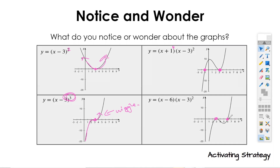We're also going to have an x-intercept at three. And on this last one, notice how the multiplicity is one — so it's going to cross, then bounce at three.